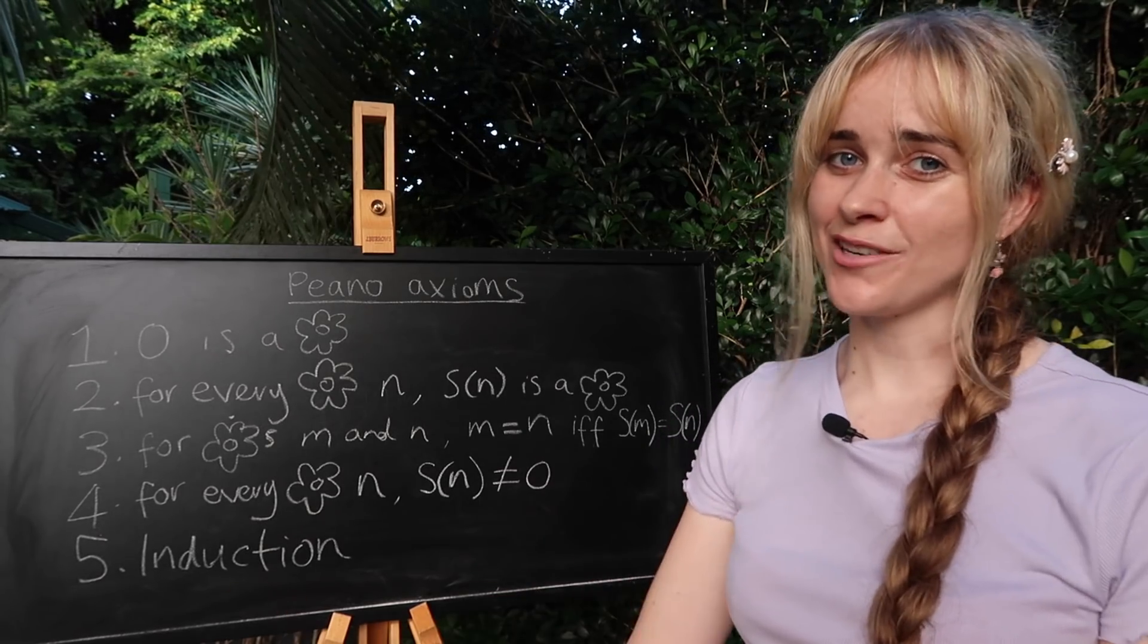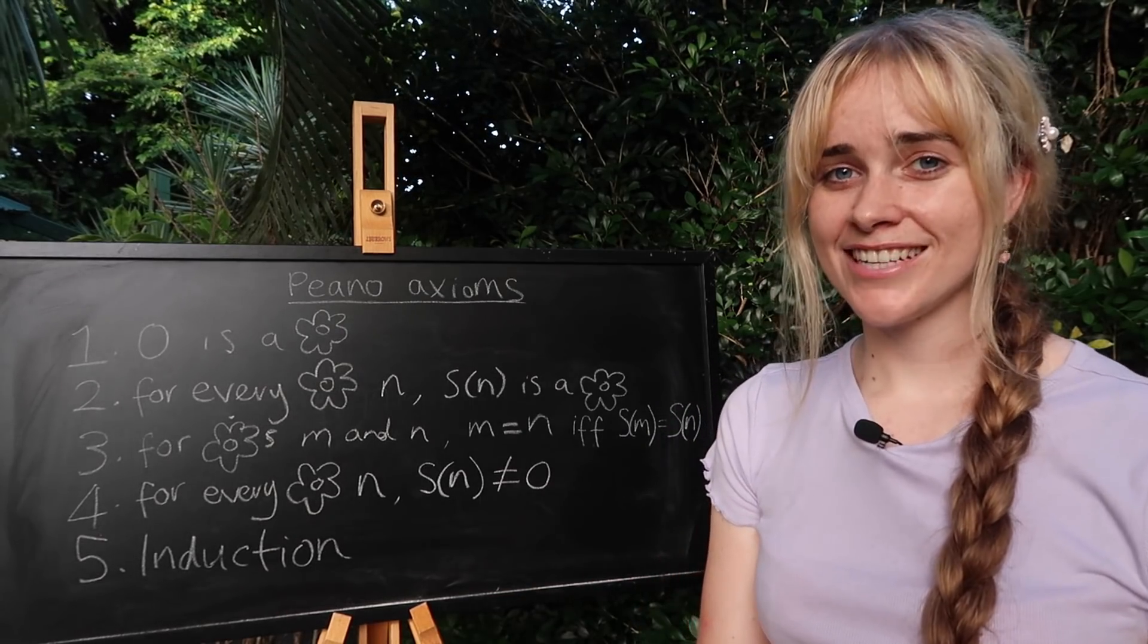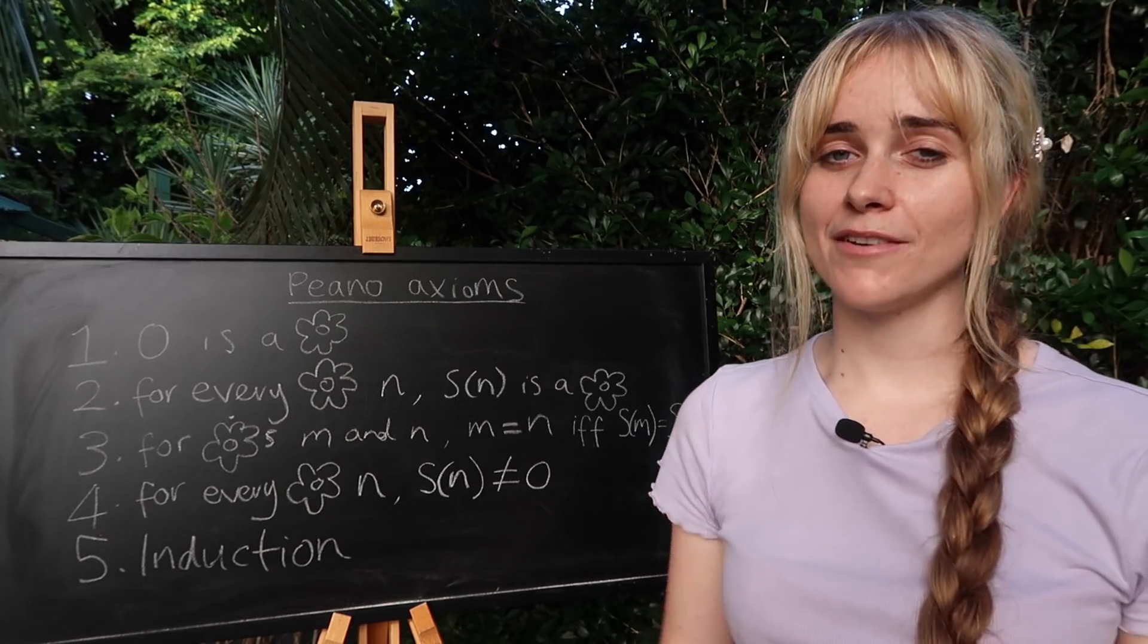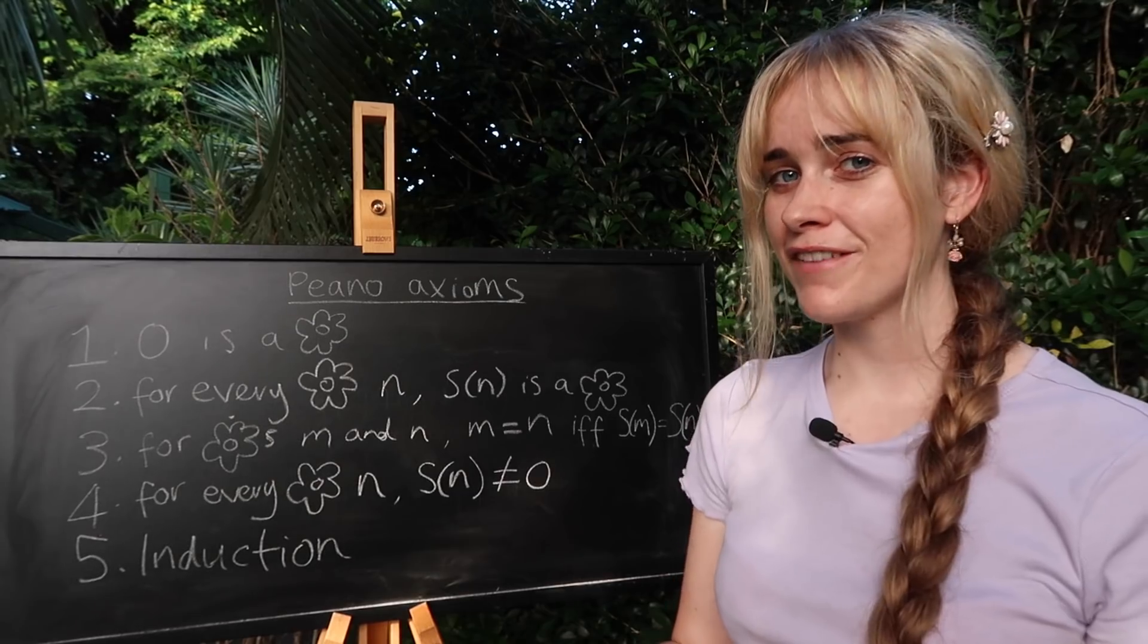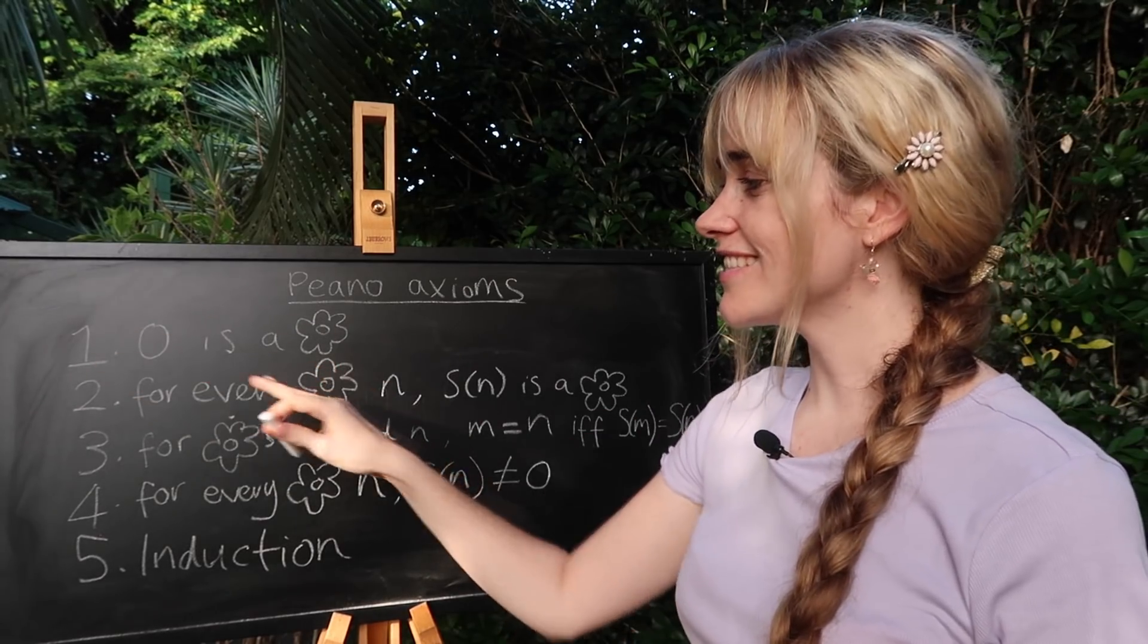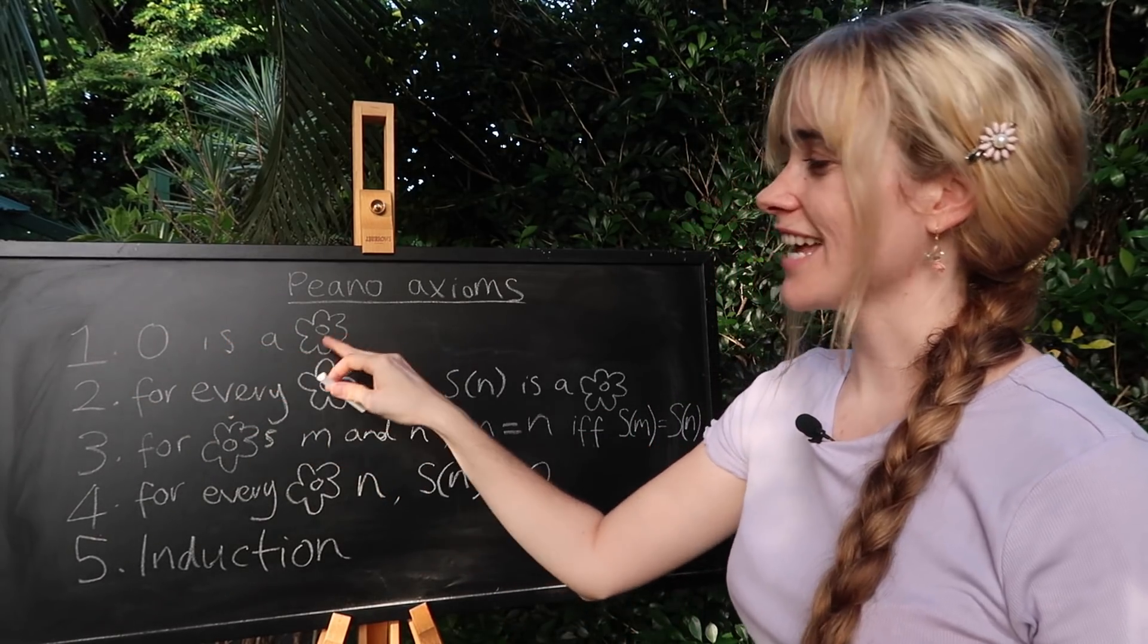And yes I am including zero in this list. That's a bit of a personal choice. I could have chosen to just start at one. But in fact our first axiom is that zero is a natural number.